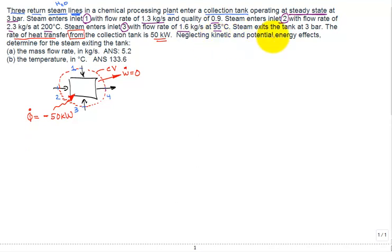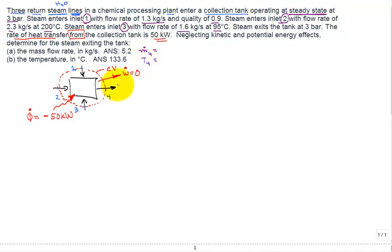Neglecting kinetic and potential energy effects, we need to determine for the steam exiting: the mass flow rate ṁ₄ in kilograms per second, and the temperature T₄. The general approach is to perform a mass balance and an energy balance.